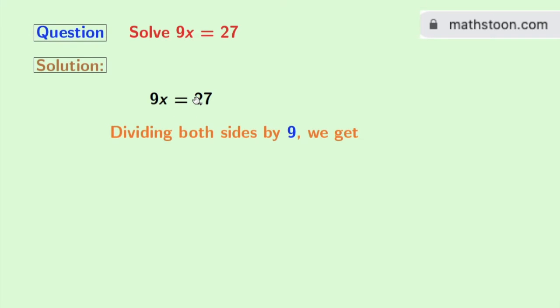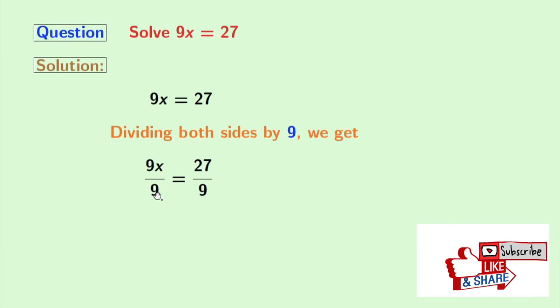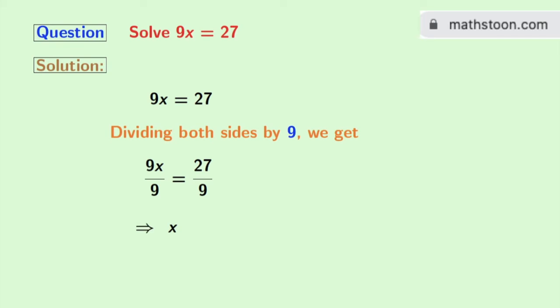Doing so, we get 9x by 9 equals 27 by 9. Look that in the left hand side, we have 9 in both the numerator and the denominator, so it gets cancelled and we are left with x.